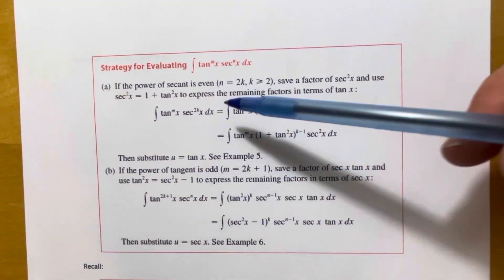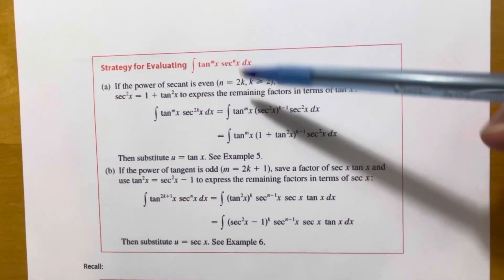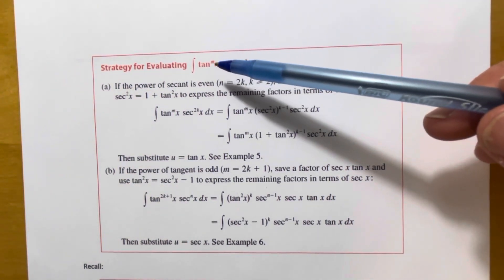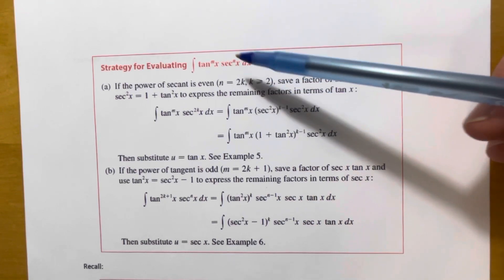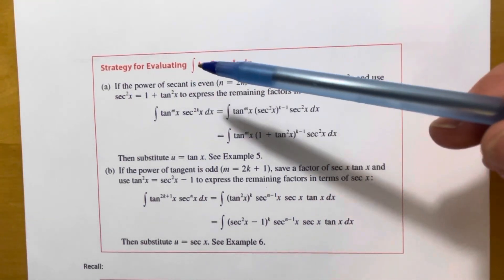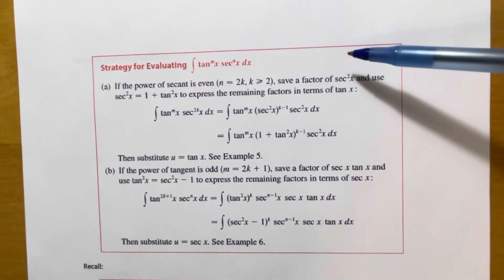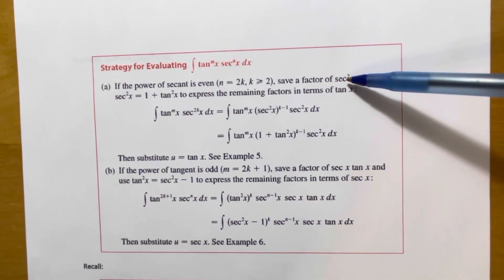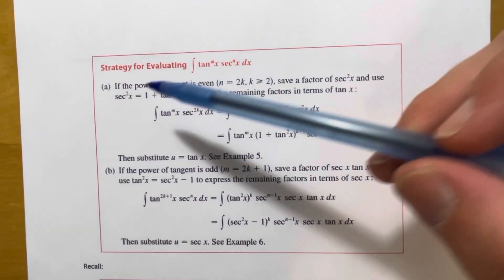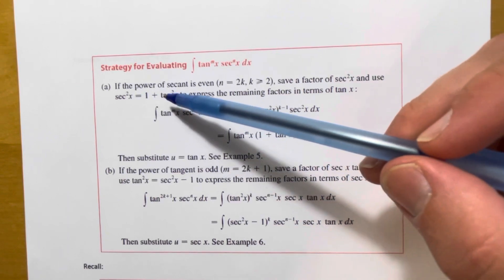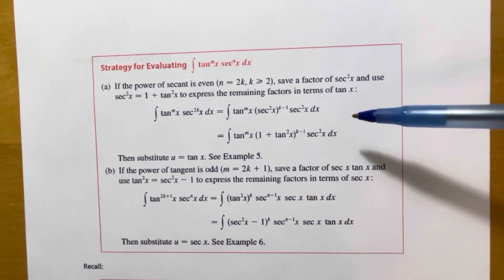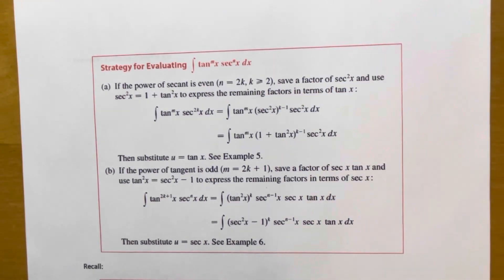This follows a similar pattern — we look at the parity, meaning odd or even, of the powers of these trig functions. Part A of our strategy: if the power of your secant function is an even number, save one factor of secant squared, then use secant squared equals 1 plus tangent squared to express the remaining factors in terms of tangent.